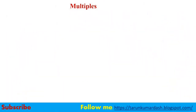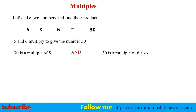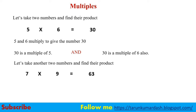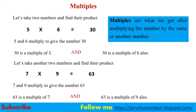Before going to Lowest Common Multiple, let us focus on multiples. 5 multiplied by 6 is equal to 30 — so 30 is a multiple of 6. 7 multiplied by 9 is equal to 63 — so 63 is a multiple of 7 and also a multiple of 9. Multiples are what we get after multiplying a number by the same or another number.